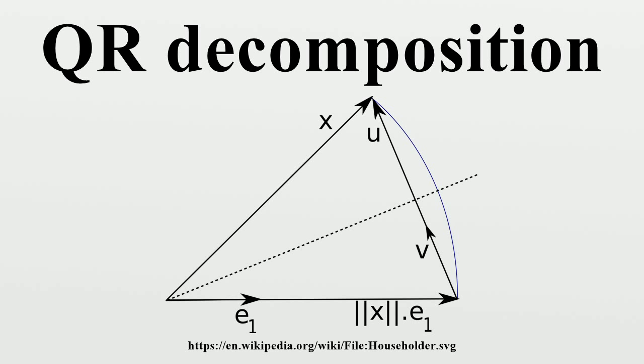Using Householder reflections: A Householder reflection is a transformation that takes a vector and reflects it about some plane or hyperplane. We can use this operation to calculate the QR factorization of an M by N matrix with M greater than or equal to N. Q can be used to reflect a vector in such a way that all coordinates but one disappear. Let x be an arbitrary real M-dimensional column vector such that for a scalar alpha.